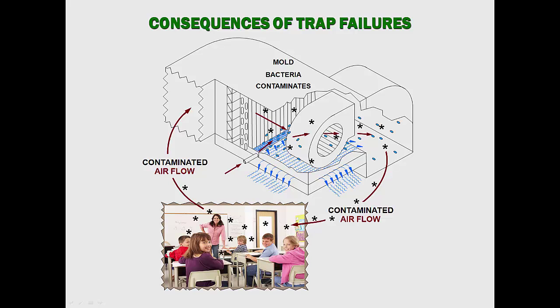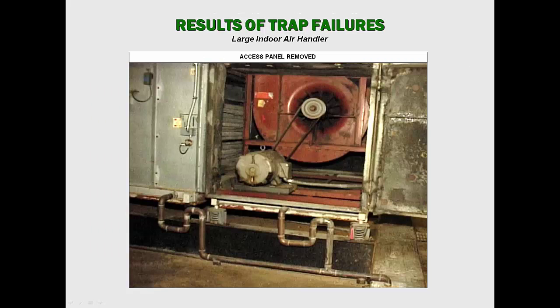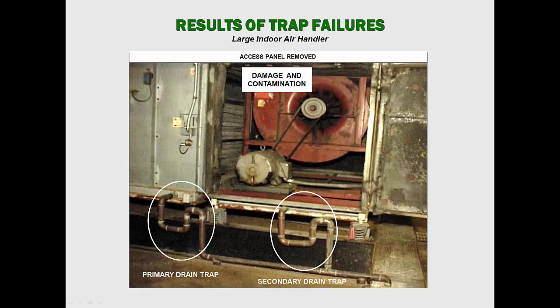The photographs that follow show examples of the damage that condensate trap failures cause to equipment and buildings. These photographs show a small rooftop air conditioning system which was operated without a trap as a result of an inherent trap deficiency and an unwise field practice. The damage and contamination shown are the results of flooding caused by a blocked trap, and were accelerated by condensate blowing and possible flooding when the trap was removed. This large indoor air handler has two traps, primary and secondary, that exhibit both inherent and design deficiencies. Observe the damage and contamination caused by these traps.